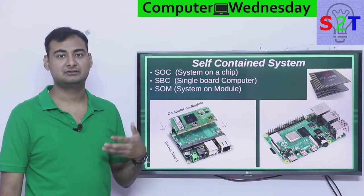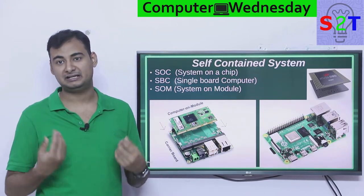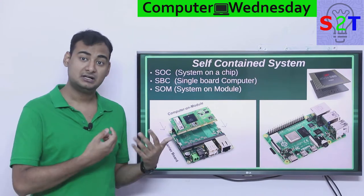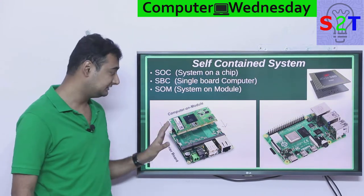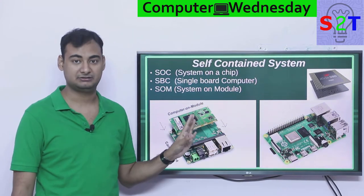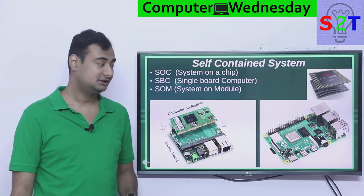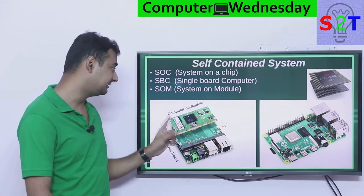This is a bridge between a single board computer and a system-on-chip — basically a system-on-chip made into a module that you can just plug into whatever system you want. You can buy a 2 GB variant, 4 GB variant, or a variant with very high-end graphics. This is what we are talking about when we talk about the Nvidia Jetson Nano — the system-on-module.